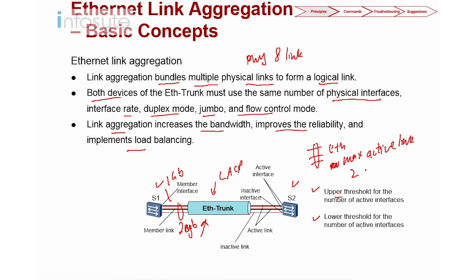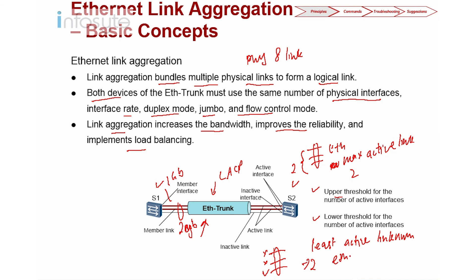With the upper threshold, if the maximum active links is set to two out of three, only two will be active and the third serves as backup. We also have a lower threshold — the minimum active link number. If the minimum is set to two and two interfaces go down, leaving only one active, the entire Ether trunk will fail and show as not working. These are the two concepts of upper threshold and lower threshold for LACP.